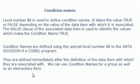The value class of the associated data item is used to identify the value which makes the condition name true. Condition names are defined immediately after the definition of the data item with which they are associated. We can use the condition names for group as well as elementary data items.